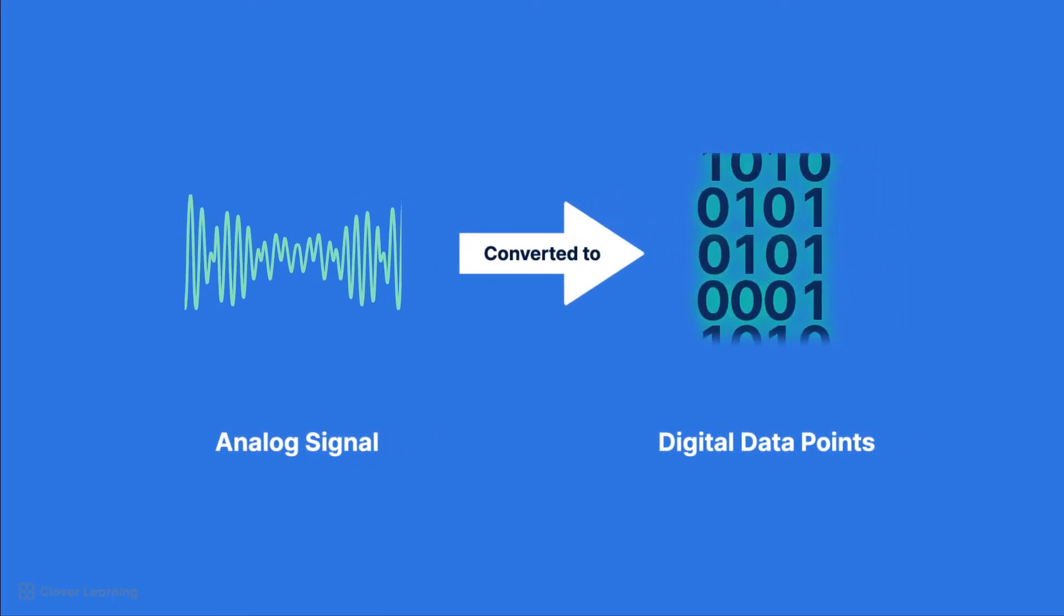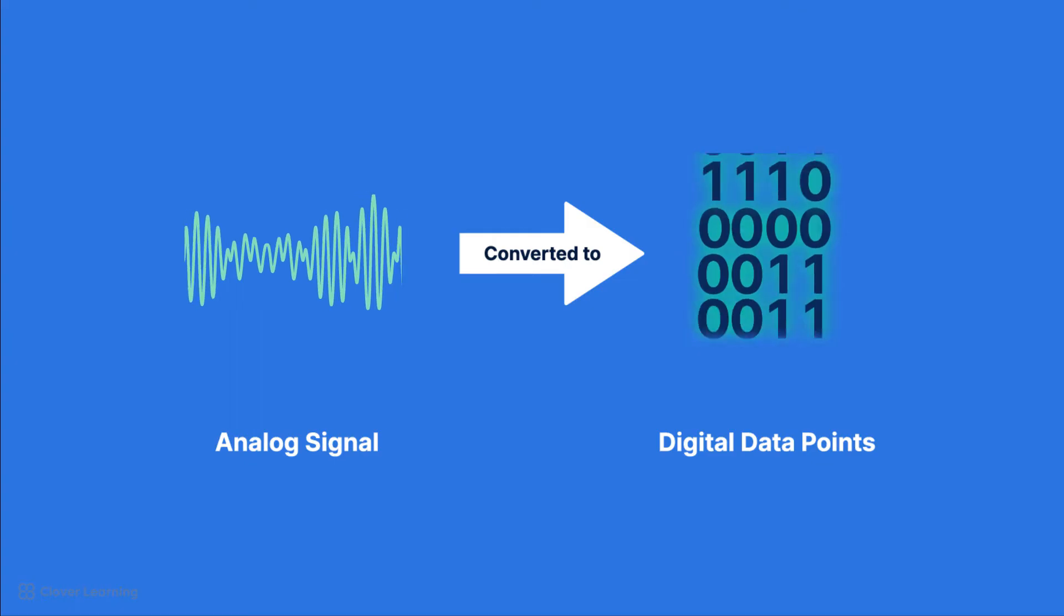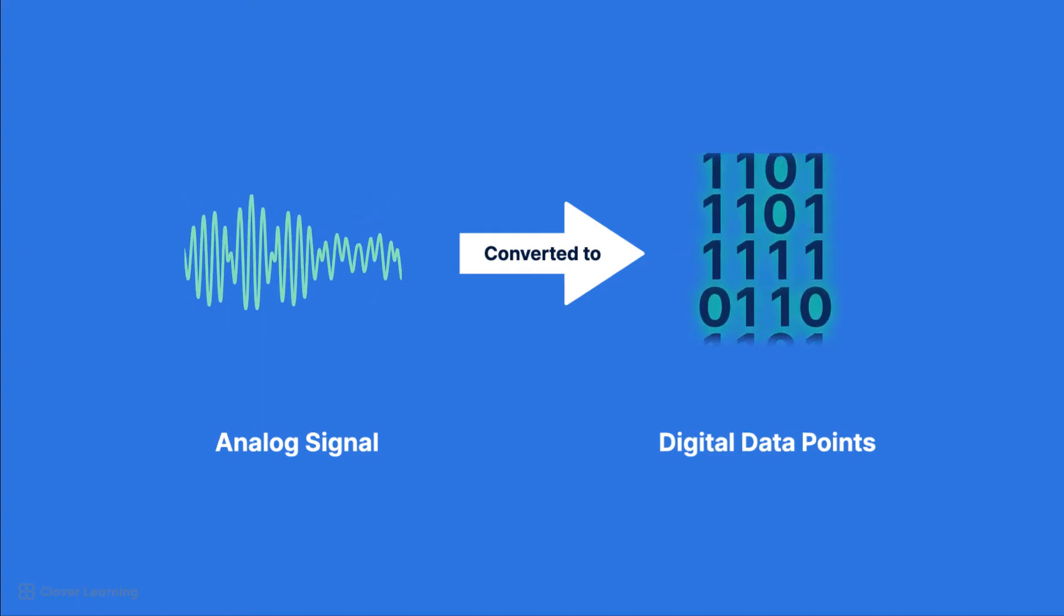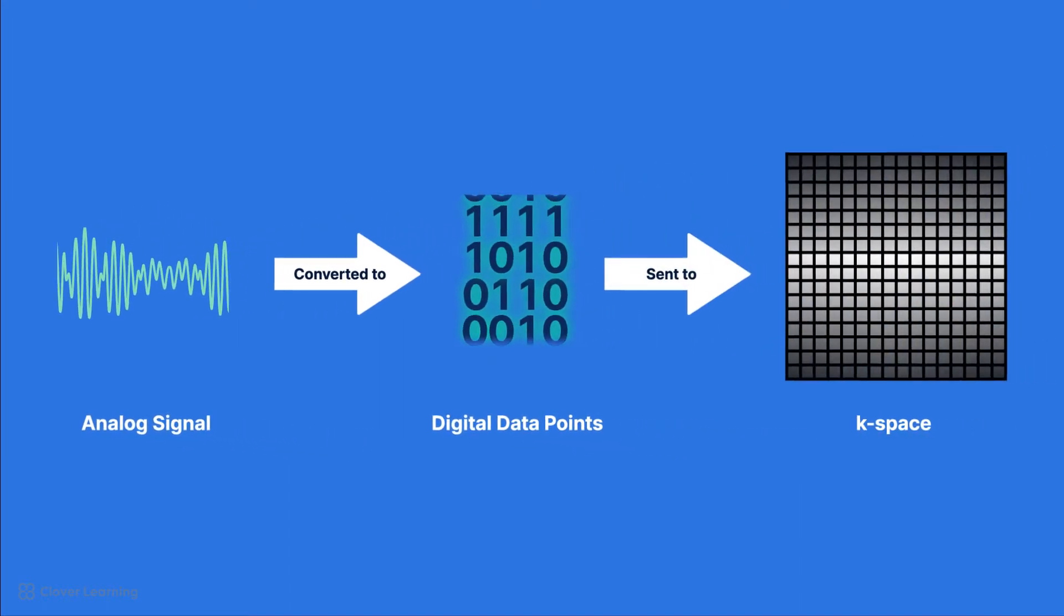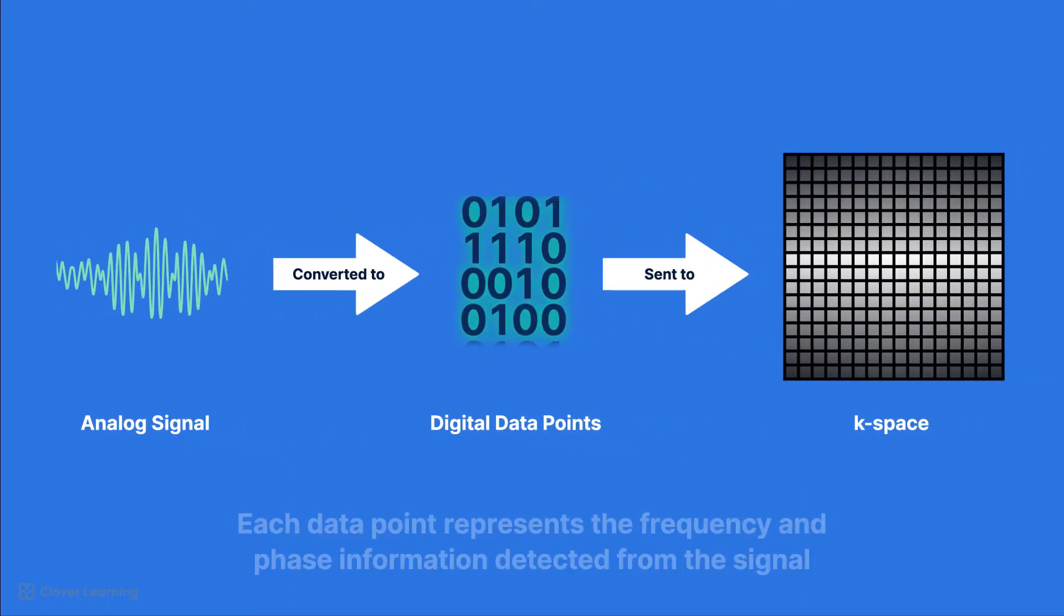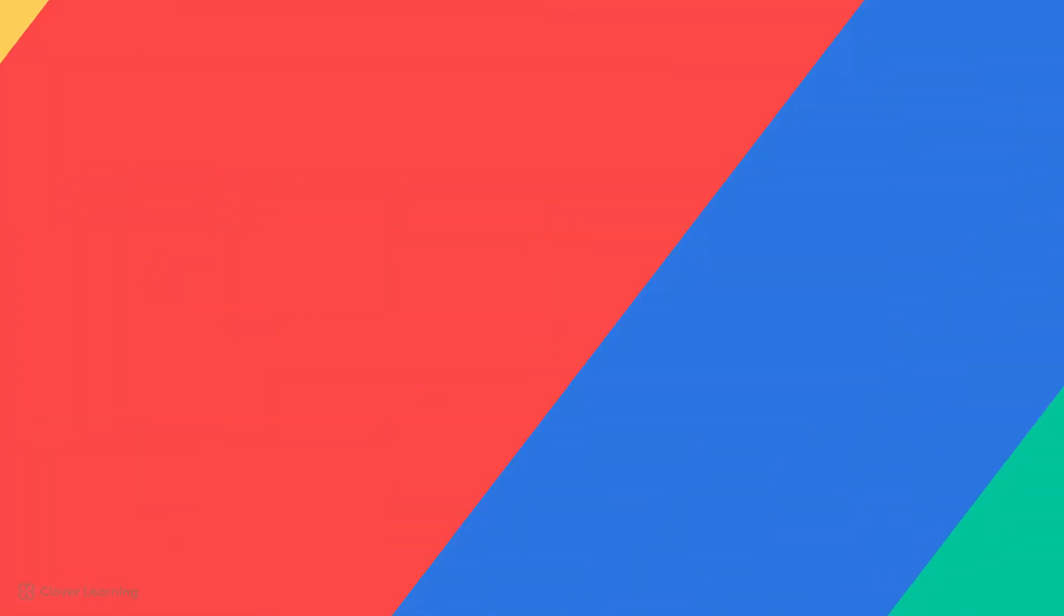During an MRI scan, signal is acquired after the magnetic moments of the hydrogen nuclei have experienced magnetic resonance. The echo creates an analog signal that has to be converted to digital data points before they can be translated to pixels to form the MRI image. After going through the analog to digital converter, the data points are sent to k-space, where each data point represents the frequency and phase information detected from the signal.